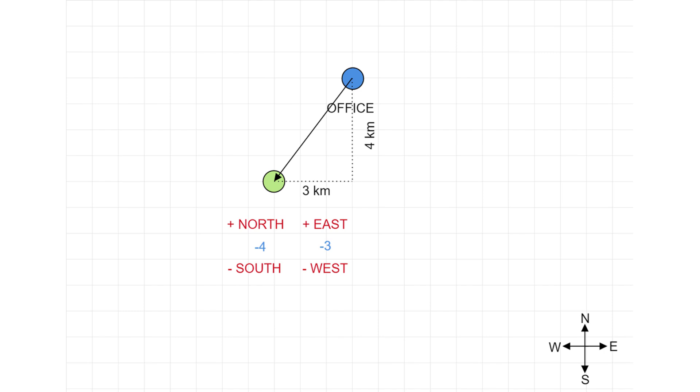This way 4 km to the south and 3 km to the west of the office could be encoded as negative 4 negative 3. This is what encoding and decoding are.